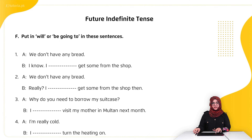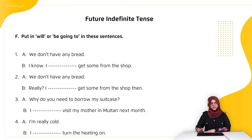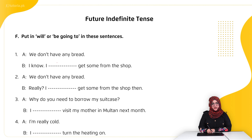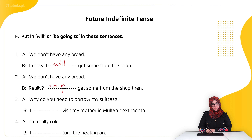Exercise: put in 'will' or 'be going to' in these sentences. First: 'We don't have any bread.' 'I know, I will get some from the shop.' Second: 'We don't have any bread.' 'Really? I am going to get some from the shop then.'